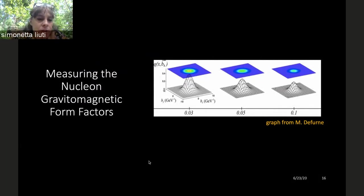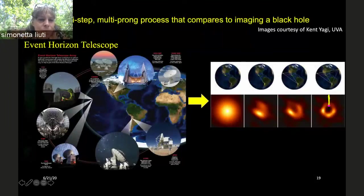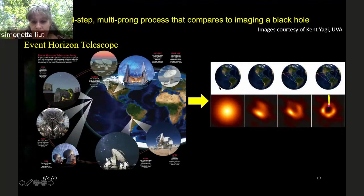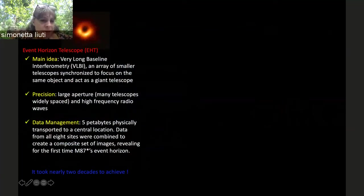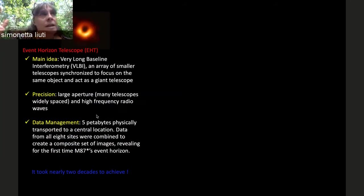Now, what does it take to measure the nuclear gravitomagnetic form factors? In my opinion, this is a multi-step, multi-prong process comparable to imaging a black hole. Similarly to the Event Horizon Telescope, which coordinates data from telescopes around the world with very precise timing — collecting five petabytes of data — we need to coordinate our measurements in a precise way to give a final image.